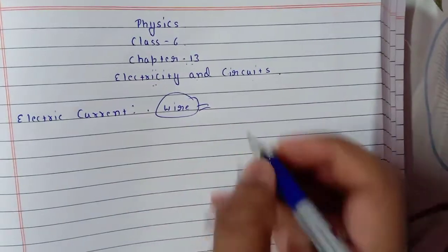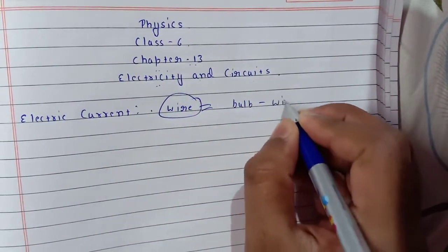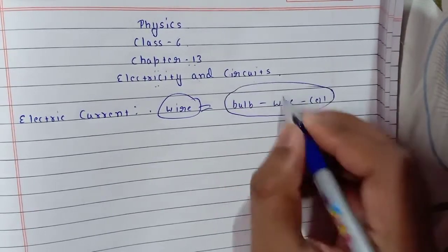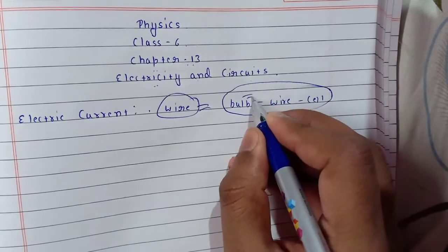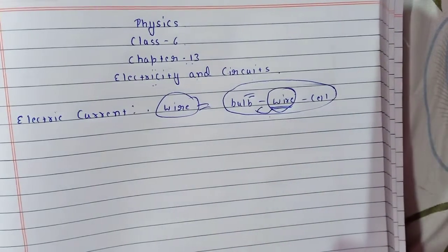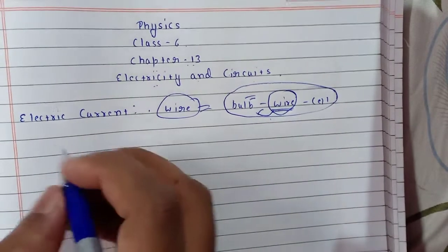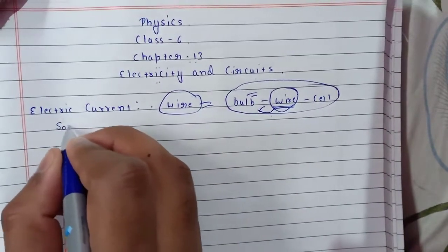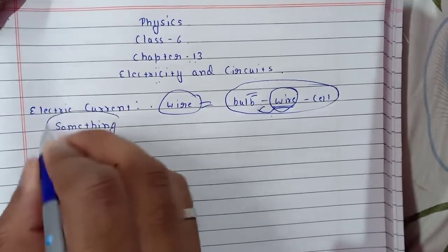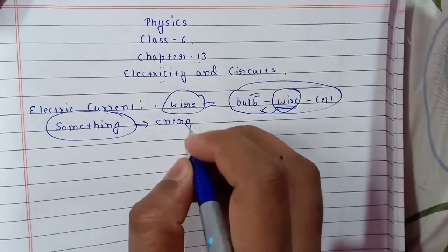When we see a bulb connected with a wire and a cell, this is the same setup we connect, and our bulb will glow. So what is present inside the wire that makes it glow? There must be something flowing, and there must be some energy.